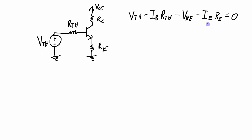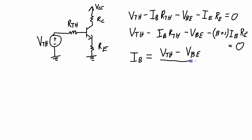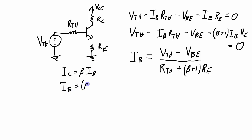Remember, the emitter current is equal to beta plus 1 times IB, so we can substitute that in. Substituting beta plus 1 times IB for the emitter current and setting the sum equal to zero, with a little algebra we can solve for IB. We get IB equals the Thevenin voltage minus the base-emitter junction drop, divided by RTH plus beta plus 1 times RE. Now that we've solved for the base current, we can also very easily solve for the collector current as well as the emitter current.